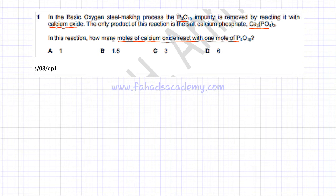We need to first create a balanced equation. So we have P4O10 reacting with calcium oxide, CaO, and the product of the reaction is calcium Ca3(PO4)2. Calcium phosphate is the product of the reaction and we just need to balance this equation.